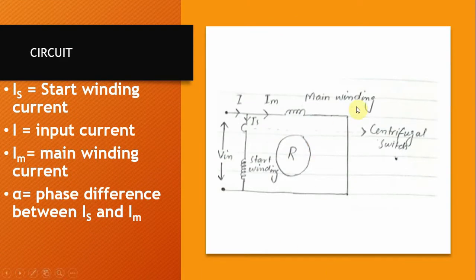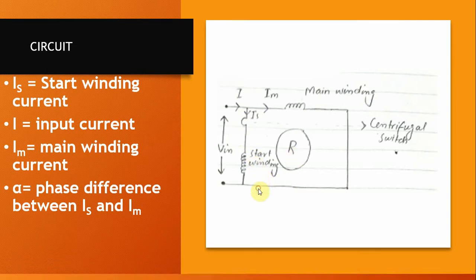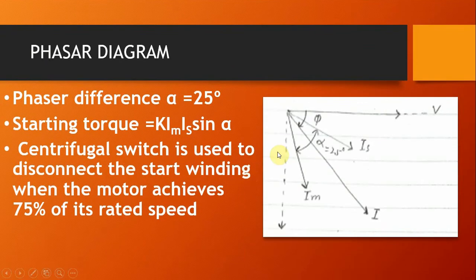Here is the circuit of a split phase induction motor. You can see the starter winding and the main winding. The particular terms are: IM is the main winding current, IS is the starter winding current, and VIN is the supply voltage or supply AC power. There will be a particular phase difference between IS and IM. In the phasor diagram of the split phase induction motor, the phase difference alpha between IM and IS is equal to 25 degrees.